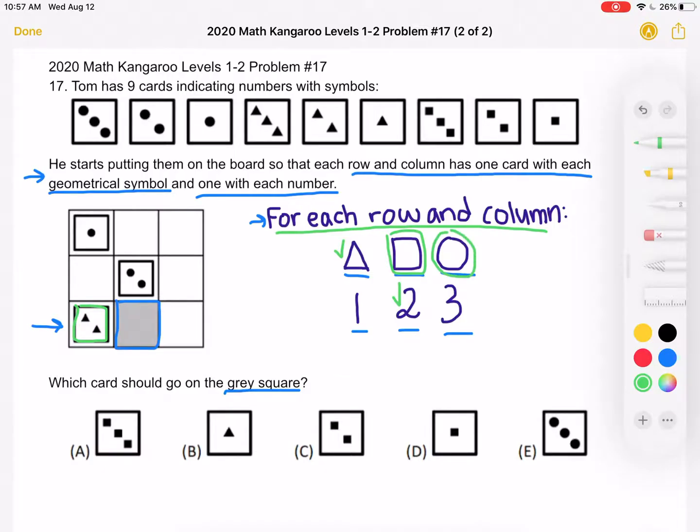That means we're trying to place squares and circles in these two remaining tiles of the board. So one of them has squares and one of them has circles.